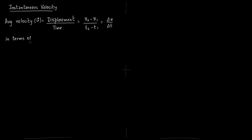Now in terms of differential calculus, you can write velocity as dx/dt. That is, we are replacing delta x and delta t with their differential forms. This is what is called instantaneous velocity — velocity expressed in terms of differential calculus is called instantaneous velocity.